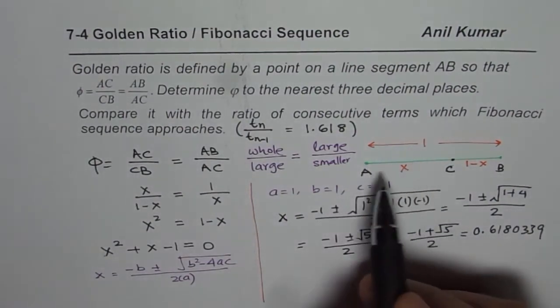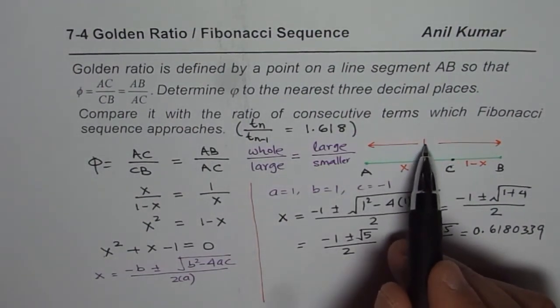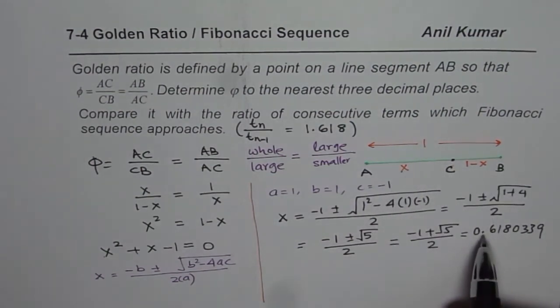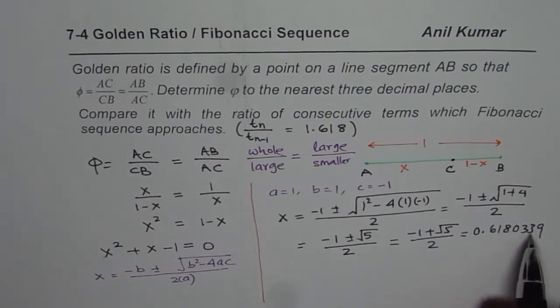This length is X, the ratio that means, 1, if the 1 is the whole thing, then X is 0.6180339. It is irrational number, it is not a repeating decimal.